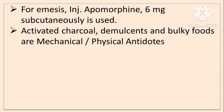Activated charcoal, demulcents and bulky foods are mechanical antidotes. There are four types of antidotes: mechanical or physical antidotes, chemical antidotes, physiological or pharmacological antidotes, and universal antidotes. Mechanical antidotes prevent or impede the absorption of poison.